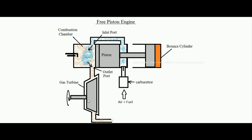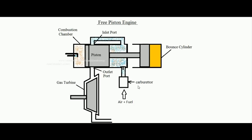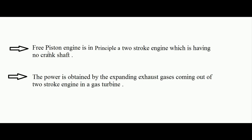So the cycle completes. Whatever work is done on the piston is transferred to compress the air of the bound cylinder. The actual energy for utilization is developed in the gas turbine by the help of exhaust gases coming out from the two-stroke engine cylinder. Remember: the free piston engine is principally a two-stroke engine with no crankshaft, and since there is no crankshaft, the exhaust gases are expanded in a gas turbine to get power. Thank you.